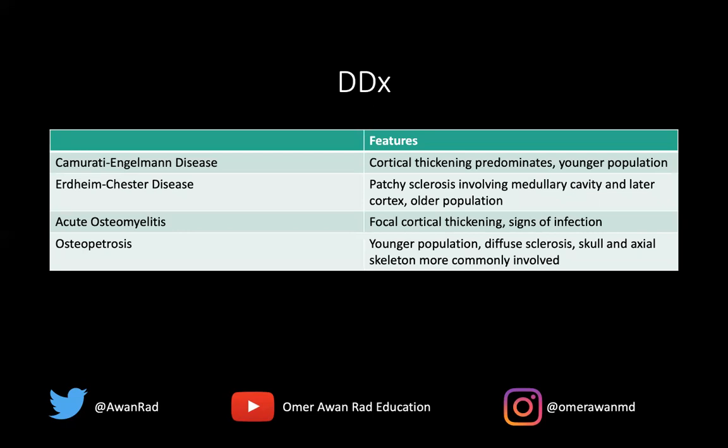I want to go over the differential diagnosis and talk about why the other choices were not the best in this case. In Camurati-Engelmann, cortical thickening is what predominates. We did have intramedullary sclerosis, but it was really the cortical thickening that was most pronounced. This also happens in a younger patient population, which is important — that's why I gave the history of a 25-year-old. In Erdheim-Chester disease, it can look very similar because you get patchy sclerosis involving long bones, it's also symmetric, and it can involve cortical thickening as well as medullary sclerosis. However, the medullary sclerosis is really the dominant feature in Erdheim-Chester, while cortical thickening happens later in the disease process.